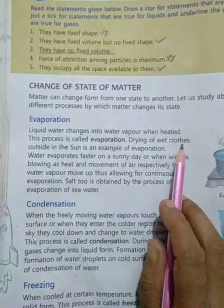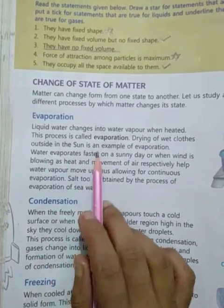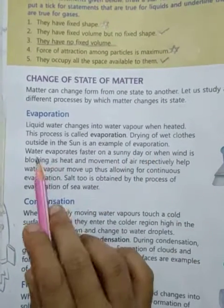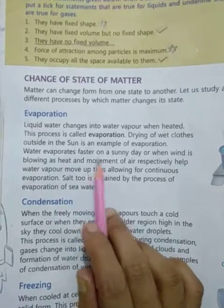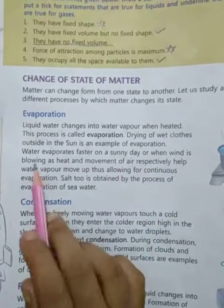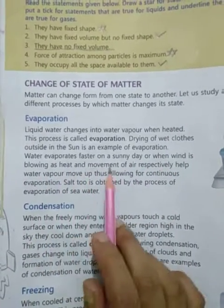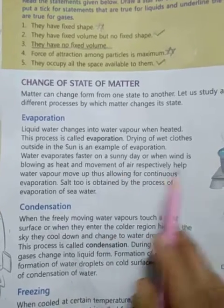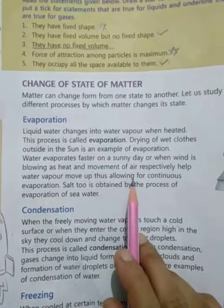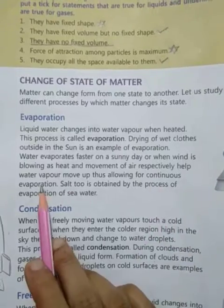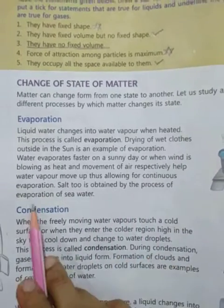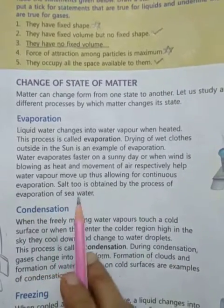Drying of wet clothes outside in the sun is an example of evaporation. Water evaporates faster on a sunny day or when wind is blowing, as heat and movement of air respectively help water vapor move up, allowing for continuous evaporation. Salt is also obtained by the process of evaporation of seawater.